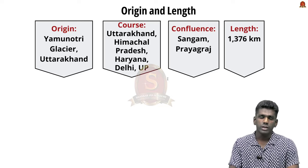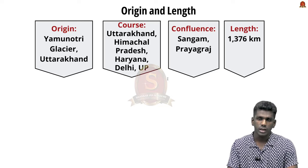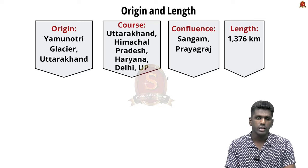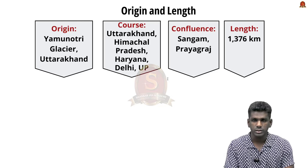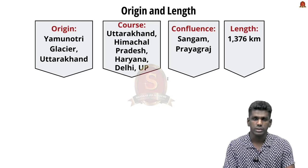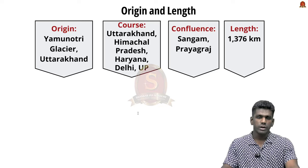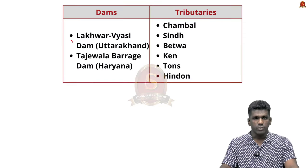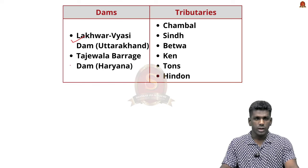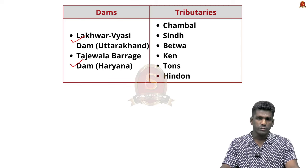After flowing through Uttarakhand, Himachal Pradesh, Haryana and Delhi, Yamuna meets the Ganges River at Prayagraj in Uttar Pradesh. It flows for about 1376 kilometres. These are the important dams located on Yamuna River: Latwar Vyasi Dam in Uttarakhand and Tajaywala Barrage Dam in Haryana.